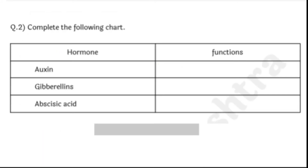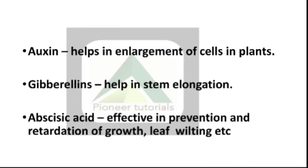Question number 2: Complete the following chart. The chart has hormones and their functions. The hormones are: auxin, gibberellins, and abscisic acid. The function of auxin is enlargement of cells in plants. Gibberellins help in stem elongation. Abscisic acid is effective in prevention and retardation of growth, leaf wilting, etc.